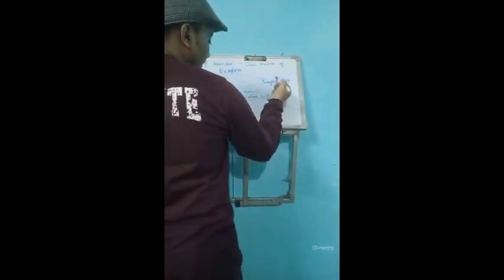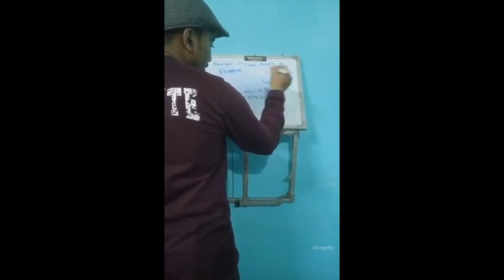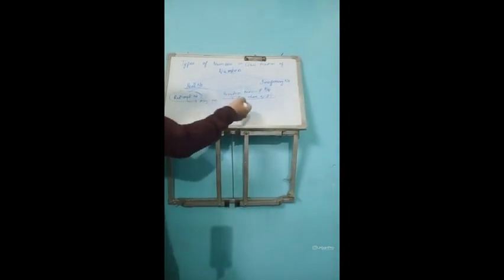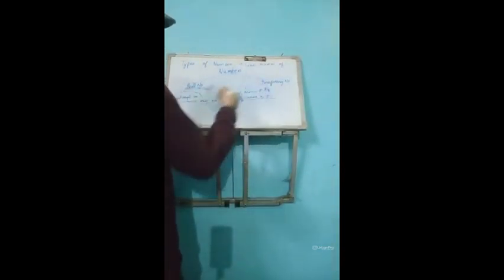Whereas in mathematics, an irrational number is a number which cannot be written in the form p by q. So a rational number is any number which can be written in the form p by q, whereas irrational cannot be written in the form p by q.